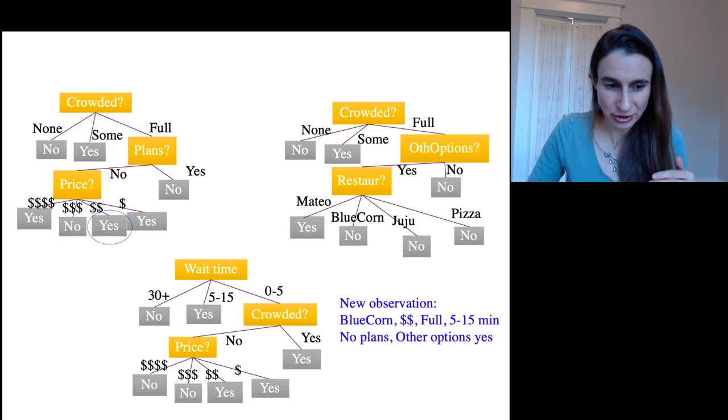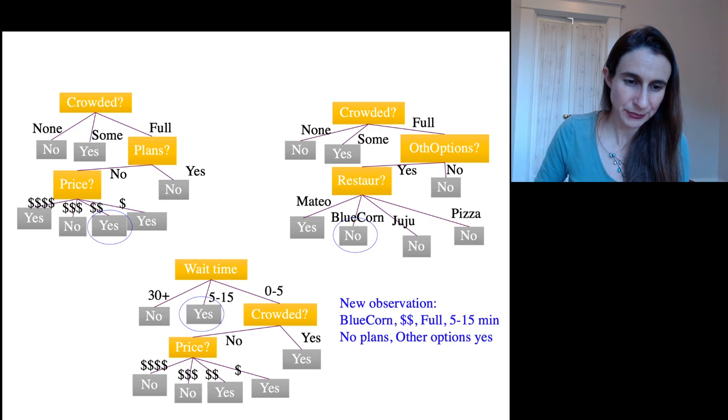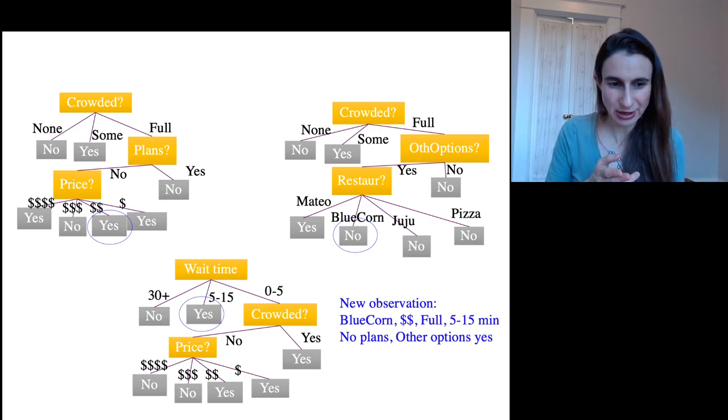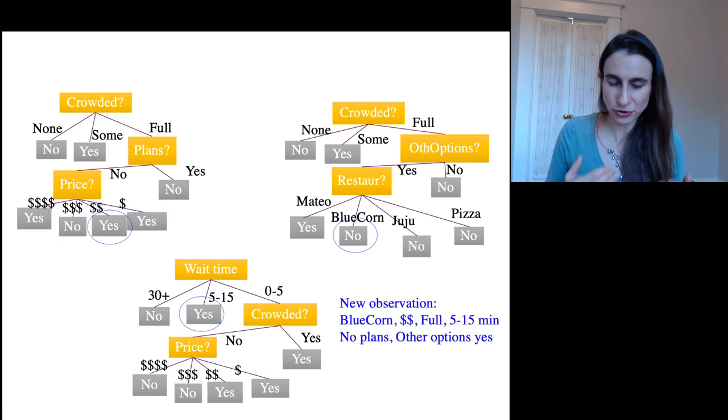And then for the second tree, we just ask what the wait time is. It's 5 to 15 minutes, so we say yeah, the customer is going to wait for a table. But for the third tree, the restaurant is crowded, they have other options, and it's Bluecorn, so they won't wait. So these trees differ in their opinions, and we're going to take the majority vote.